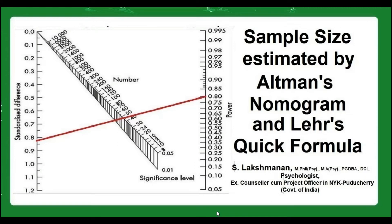Welcome viewers. I will explain the title of sample size estimated by Ordman's nomogram and by Lerth's quick formula method. Look at the left side of the page containing a graph image, which is called Ordman's nomogram. This picture is easily available on the internet; a link will be given in the description box for downloading this image. Please download this graph image and use it for calculating the sample size. I will also explain Lerth's quick formula method here.